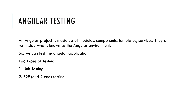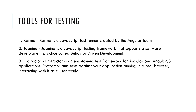What are the different types of testing in Angular? An Angular project is made of modules, components, templates, and services, all running inside the Angular environment. We can test an Angular application in two ways: unit testing and end-to-end testing. Tools for testing include Karma for unit testing, and Jasmine and Protractor.